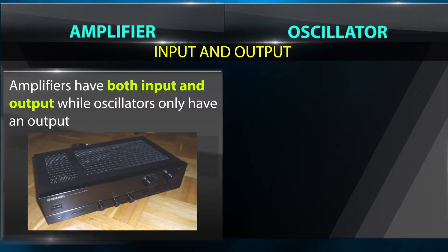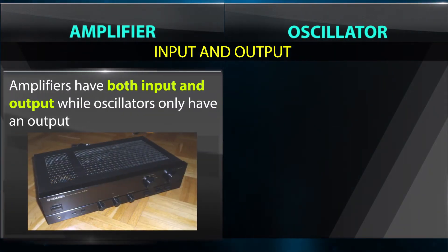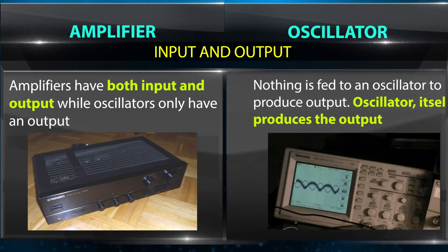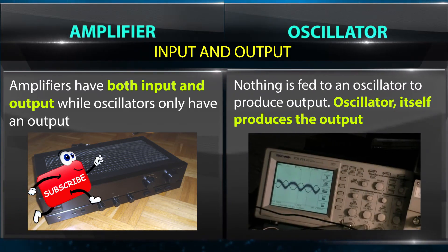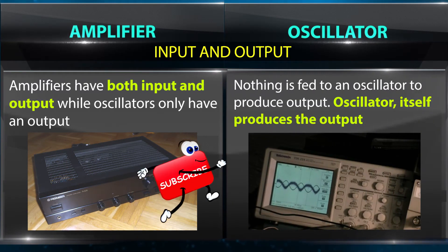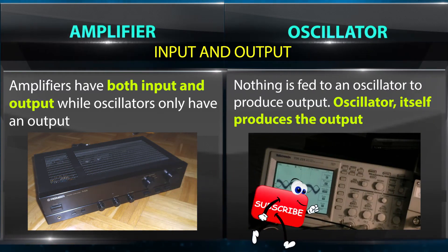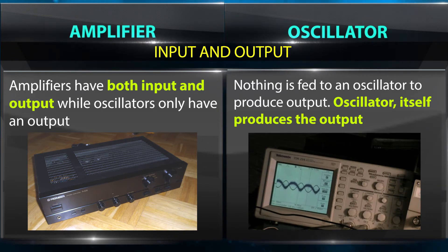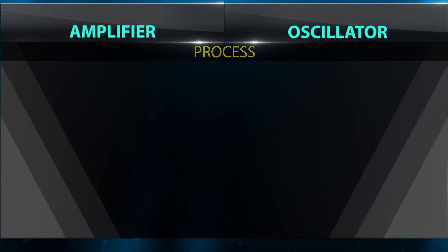Input and output: amplifiers have both input and output, while oscillators only have an output. Nothing is fed to an oscillator to produce output — the oscillator itself produces the output.